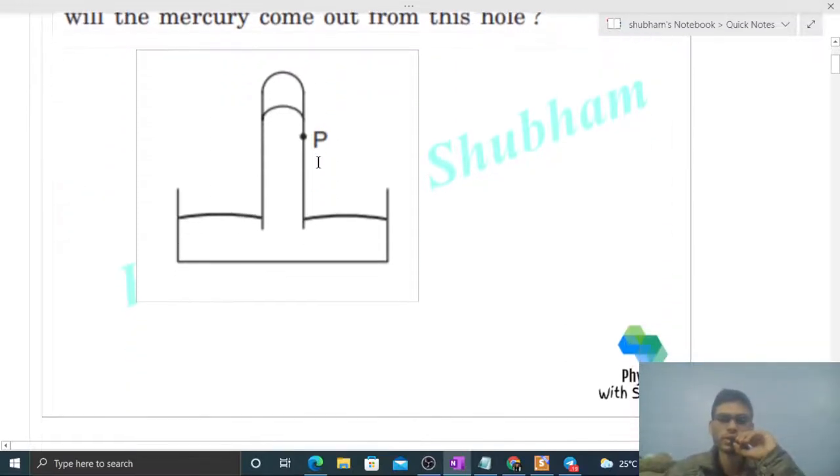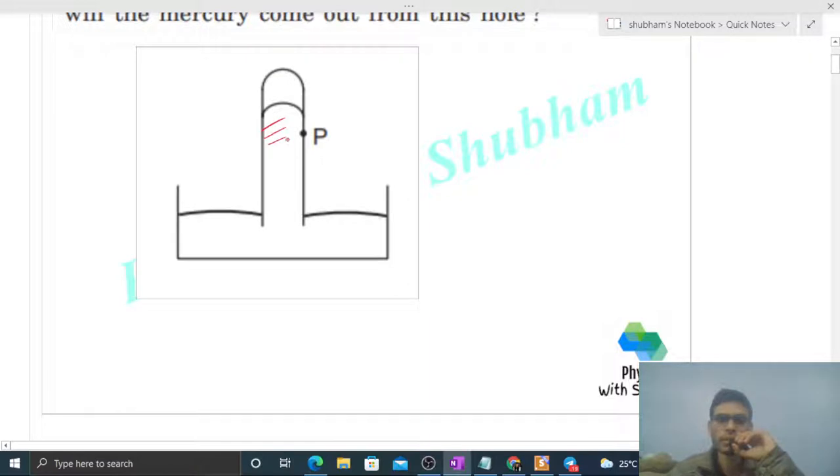So this diagram is shown here. Mercury fills the barometer tube. The atmospheric pressure will go outside. At the free surface here, the pressure is atmospheric pressure. If I put a point A, then point A will have atmospheric pressure.